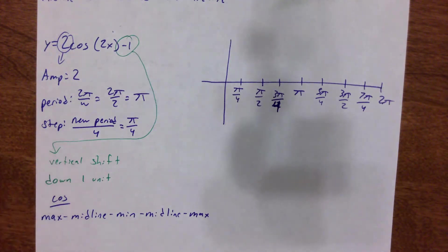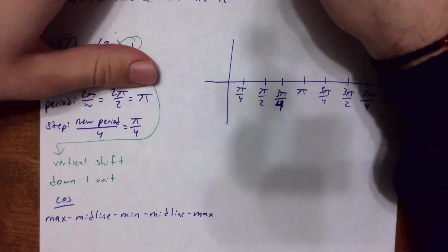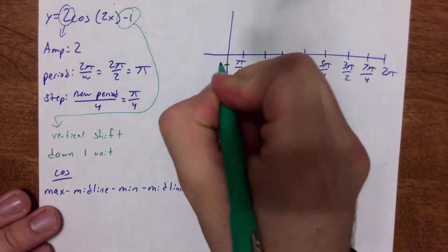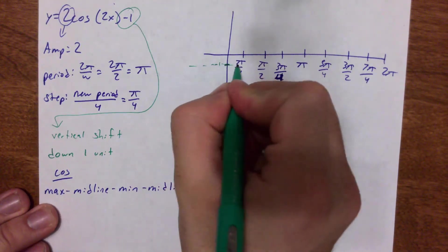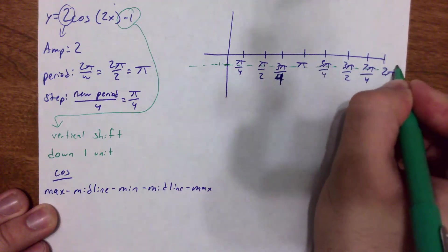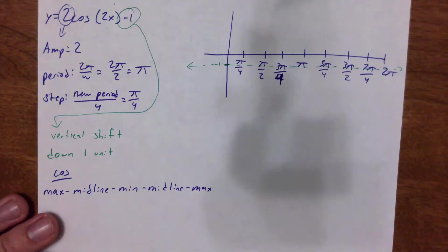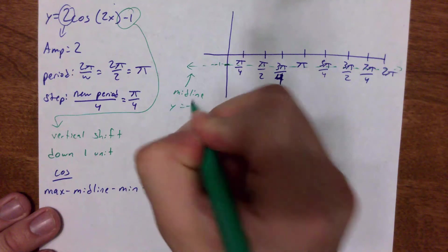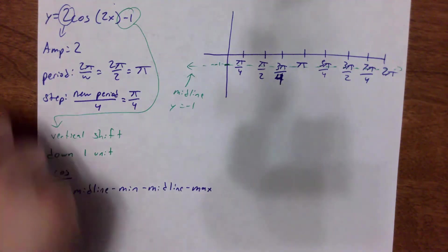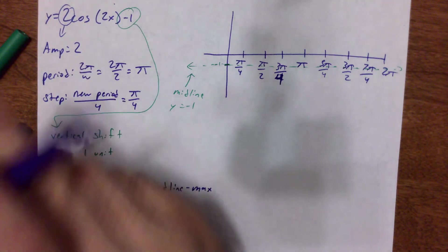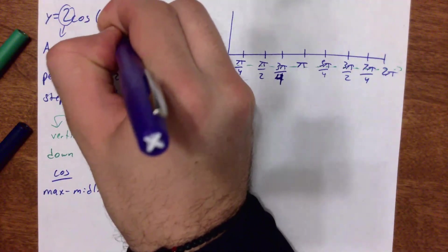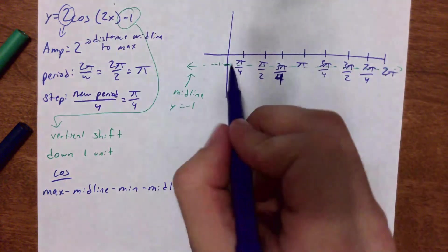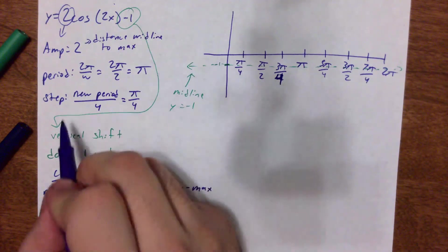Okay, this is important. I always want to make sure I deal with that vertical shift first. So I'm going to move my midline to negative 1. I know it's hard because of that scale, but it's okay. So my midline, again, is at y equals negative 1. This is important because my amplitude, that is the distance from the midline to the max.